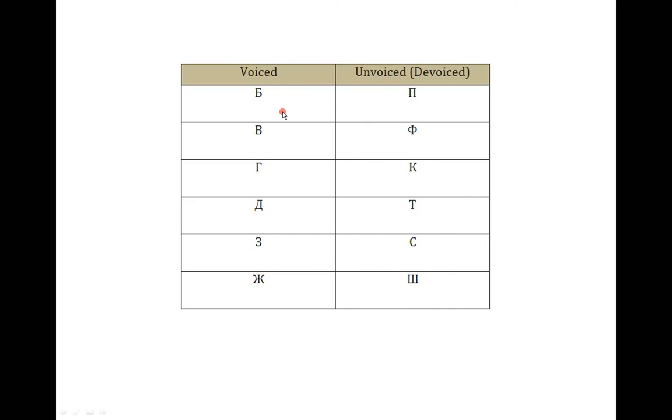So, for example, I'll go through these. The letter B - if you pronounce B and you don't use your vocal cords, you end up pronouncing the letter P. If you say V and then say the exact same consonant but don't use your vocal cords, you get F. G becomes K, D becomes T, Z becomes S, and Ж becomes Ш.